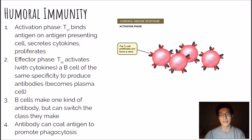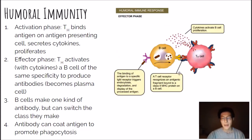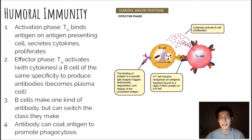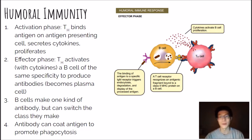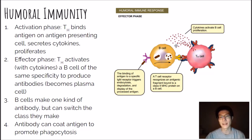Now we go to the effector phase. The activated helper T cell floats around and binds to a B cell. B cells in your body also bind certain antigens — let's say that same antigen — internalizing and shredding the virus just like the macrophage did, then presenting it on the MHC-2 system. The activated T helper cell binds to this complex and releases cytokines to activate the B cell to proliferate.